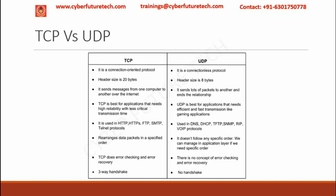TCP uses HTTP, HTTPS, FTP, SMTP, and Telnet protocols, while UDP uses DNS, DHCP, TFTP, SNMP, RTP, and VoIP protocols. TCP rearranges data packets in a specified order while UDP doesn't follow any specific order, so that must be managed in the application layer. TCP does error checking and error recovery while in UDP there is no concept of error checking and error recovery. In TCP we have a three-way handshake while UDP doesn't have any three-way handshake.